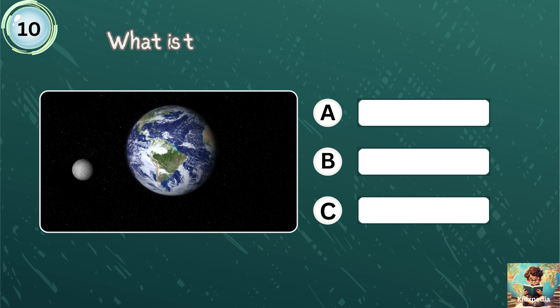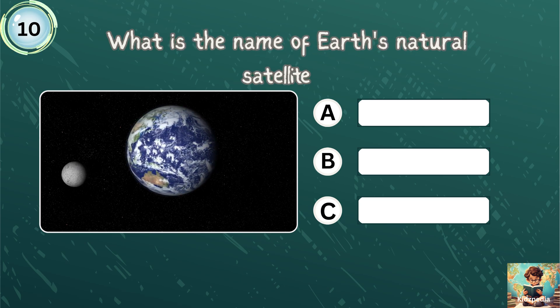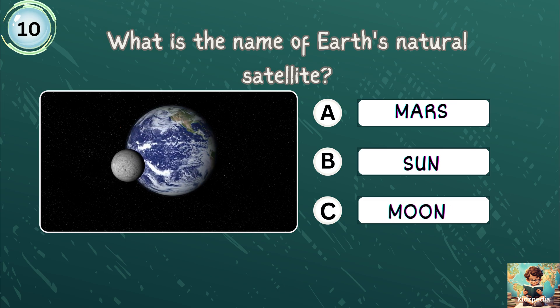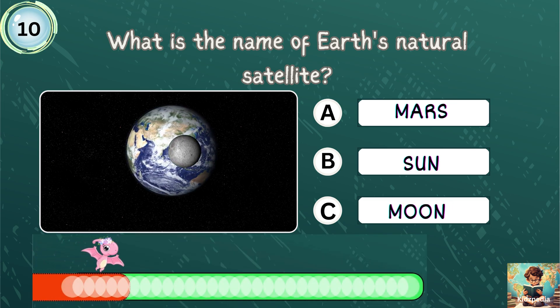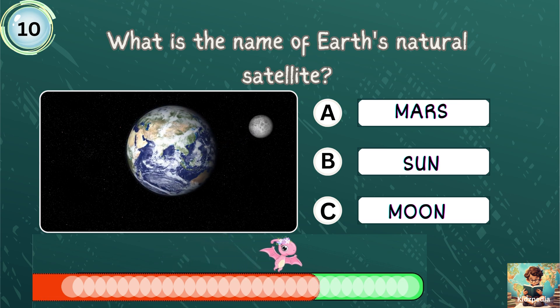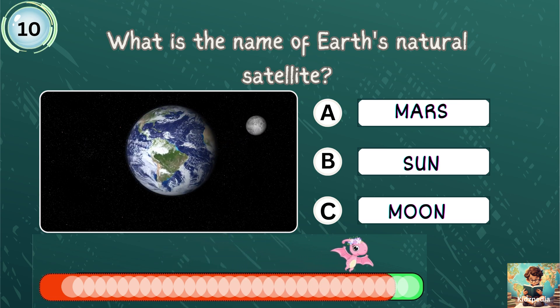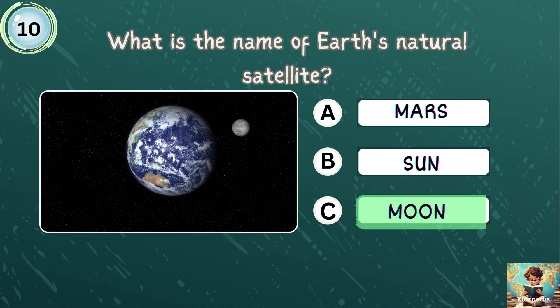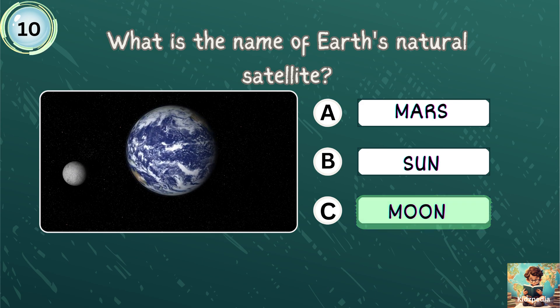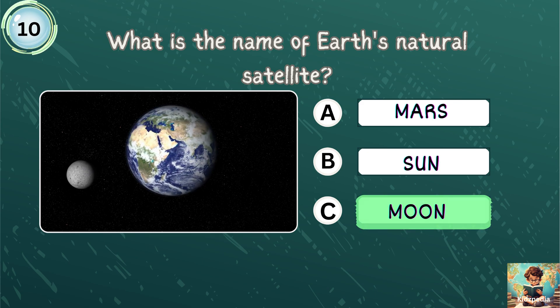What is the name of Earth's natural satellite? Mars, Sun, Moon. That's correct. Moon is the correct answer. Moon is the Earth's only natural satellite.